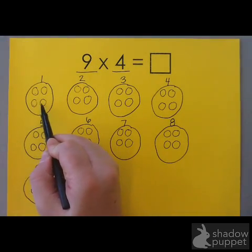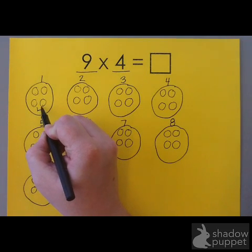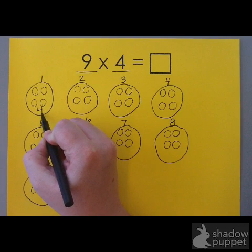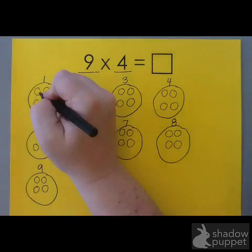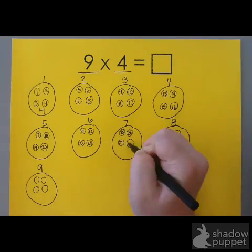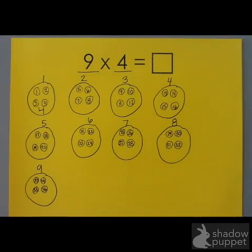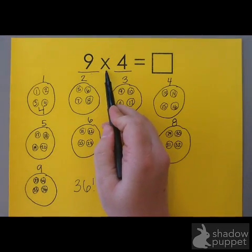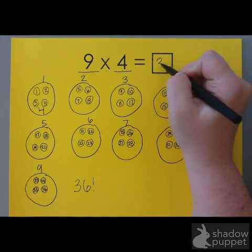See how I have 4 in each group? Now I still have to figure out the answer. To figure out the answer, I need to know the total of 9 groups of 4. So I can count how many little circles are in all the groups. There are 36 little circles in total. That means that 9 groups of 4 equals 36.